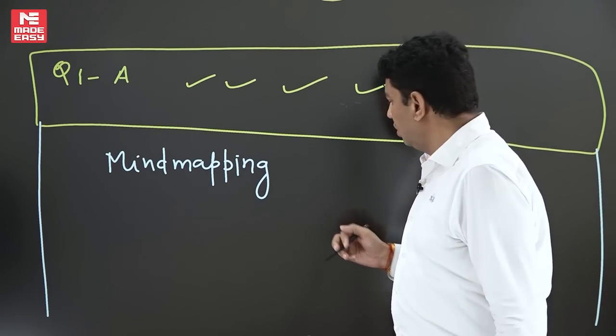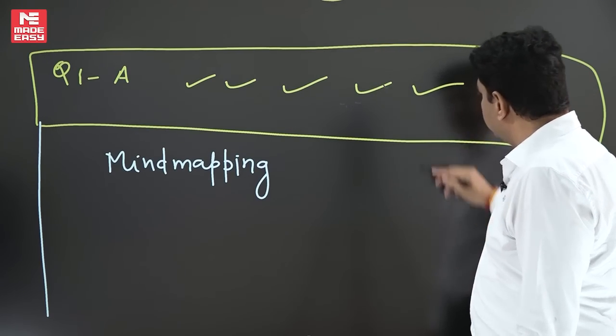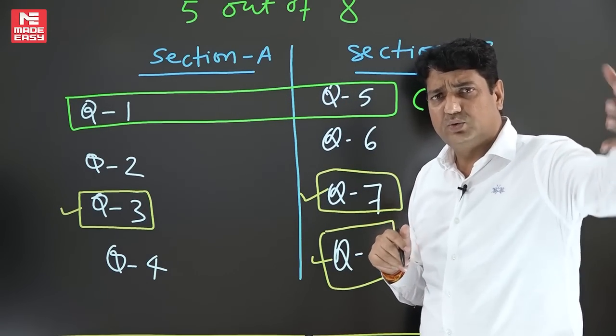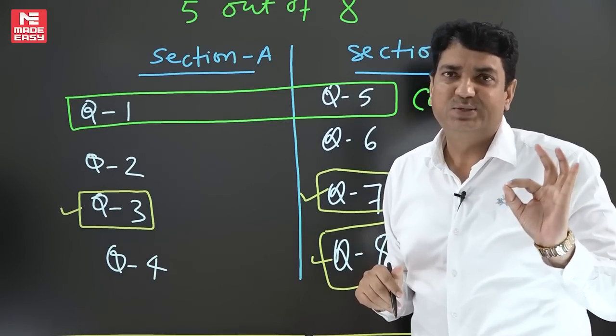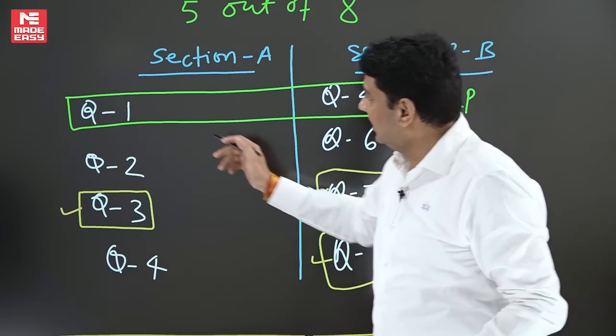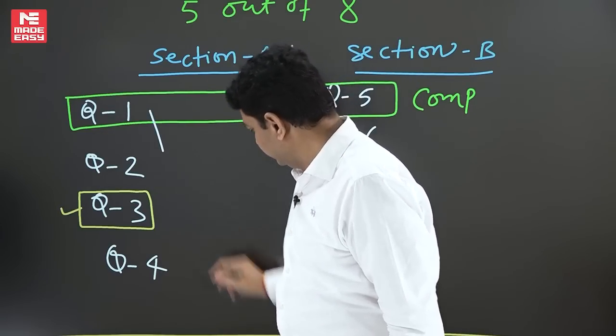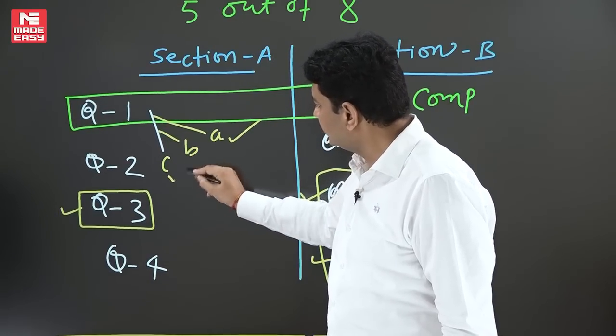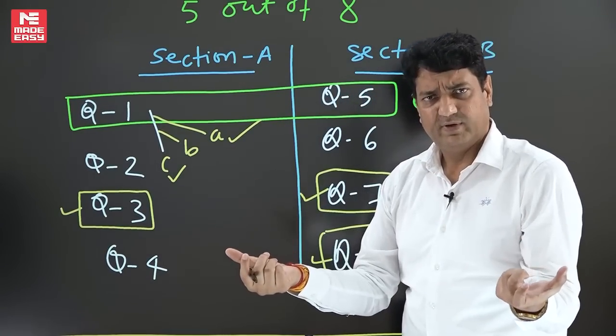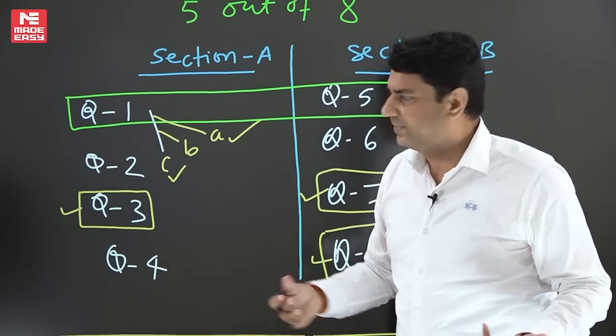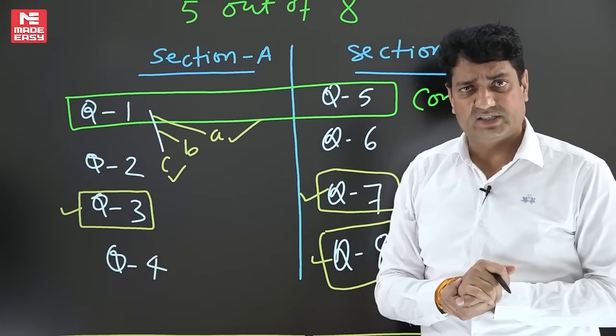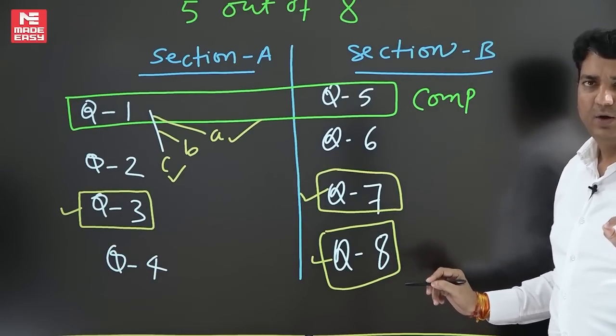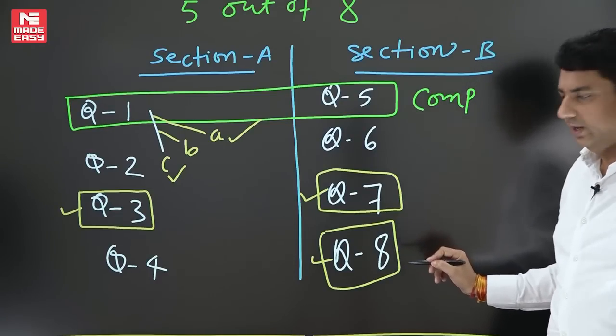Second thing is that when I told the selection of questions, usually what happens is students start answering from question number one and then they come to question number three, then question number five, then seven, then eight. So usually students follow sequence, but sequence is not compulsory. Even in question number one, if there are three sections A, B, and C, if you know A, you know C, but you are not confident in B, then B section you can leave and at the end if time permits you can come back. Similarly, it is not necessary to begin the question number one first. You can start from any question which is most easy.